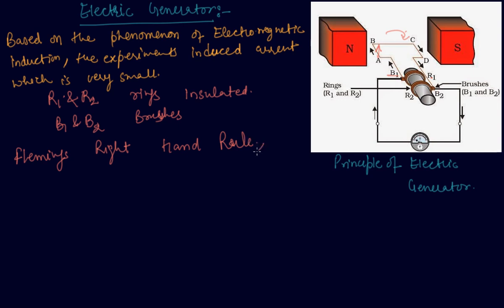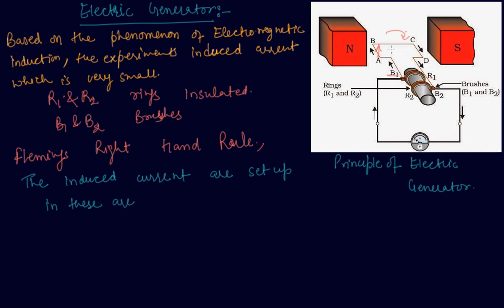The induced current is set up in these arms. As they are rotating and there is a magnetic field, due to the electromagnetic induction phenomenon, induced current is produced in the arms AB and CD.